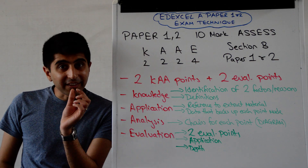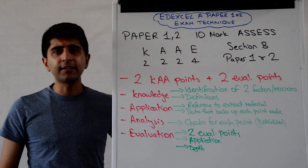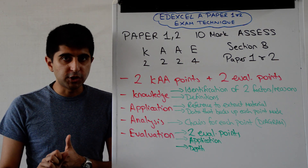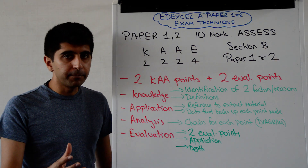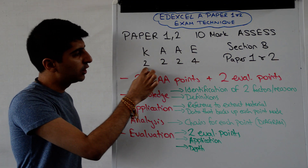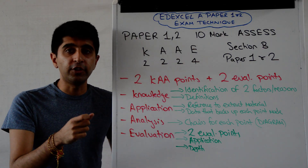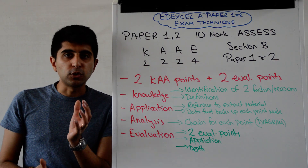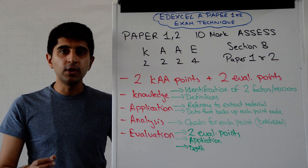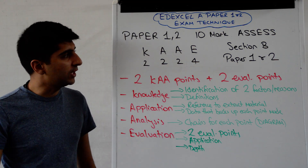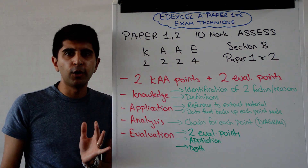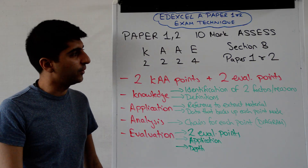Hello A-Level students. We're looking at the 10-mark assess question. This question will only come in paper one and in paper two. It's a very simple question — it's a KAA question with evaluation, broken down two, two, two, and four. The main difference between this question and the eight-mark examine question in paper one and paper two is the depth of evaluation that you need. It's not there to confuse you or to make you write loads — simply 10 minutes to make sure that you get this right.